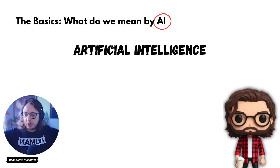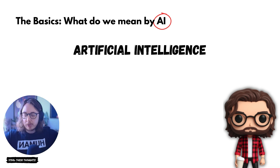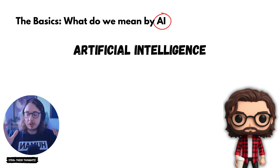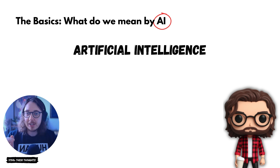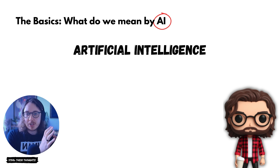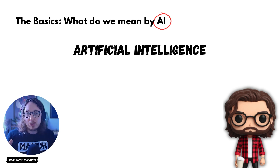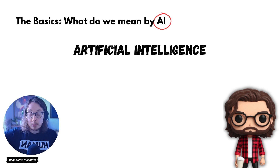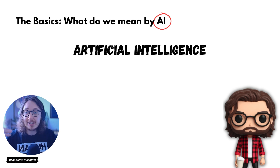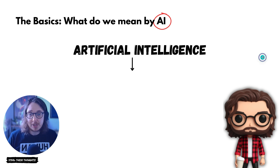When we talk about AI, artificial intelligence, imagine this as the umbrella with loads of species of AI underneath it. Artificial intelligence is what it says on the tin — it is intelligence which is artificial, not human, it's digital, and it's able to do loads of different things. The top of the umbrella, the top of the tree, is artificial intelligence.